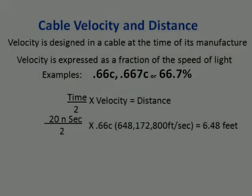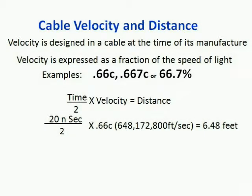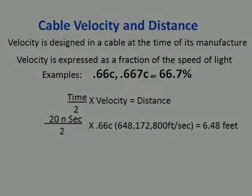To compute the distance to events, the TDR takes the time of reflection, divides by 2 because it's always a round trip, then multiplies by the cable's VF. In our example, a reflection from 20 nanoseconds is divided by 2, multiplied by 0.66, which is a little over 648 million feet per second, or over 197 million meters per second. The result is a distance of 6.48 feet, or a little over 2 meters, to the reflective event.